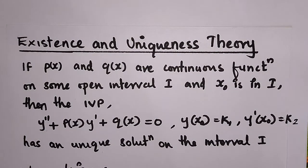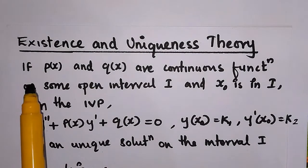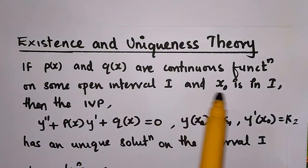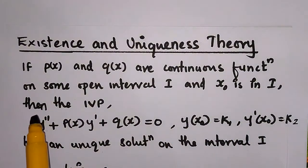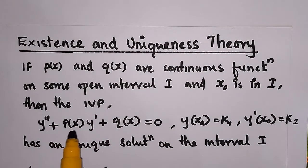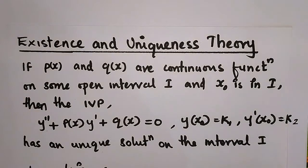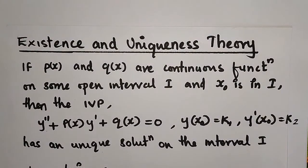Existence and Uniqueness Theorem: If p and q are continuous functions on some open interval I, and x₀ is in I, then the initial value problem y'' + p·y' + q = 0, with y(x₀) = k₁ and y'(x₀) = k₂, has a unique solution on the interval I. That is the Existence and Uniqueness Theorem.